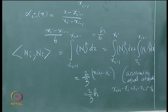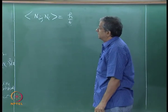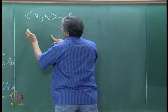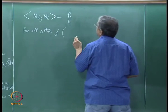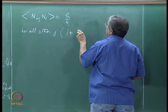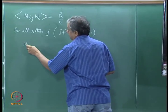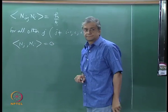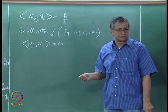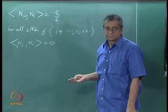The other case nᵢ₊₁ · nᵢ is also h/6. For all other j — meaning j not equal to i-1, i, or i+1 — nᵢ · nⱼ = 0. So they are not quite orthogonal; it is not as good as the box functions.